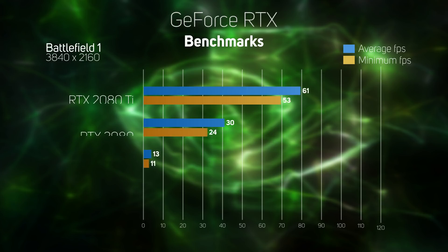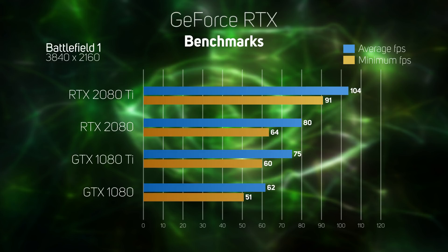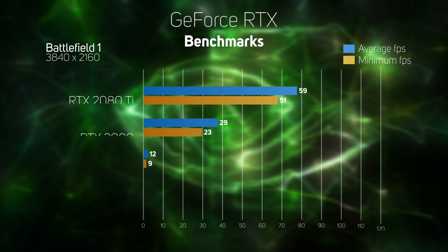The first game we ran on all of the cards was Battlefield 1, a great looking game with all the eye candy turned on. All four cards managed a smooth frame rate at 4K. However, there wasn't a huge speed up when we switched out the GTX 1080 Ti in favour of the RTX 2080 — an extra 4-5 frames per second is welcome, but clearly if you already have a GTX 1080 Ti, then an RTX 2080 isn't a worthwhile upgrade if you mostly play Battlefield 1. The RTX 2080 Ti, on the other hand, is a monster, averaging over 100 frames per second and showing a clear performance lead, with a minimum frame rate a staggering 52% faster than the GTX 1080 Ti.